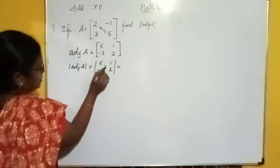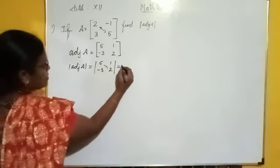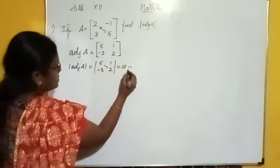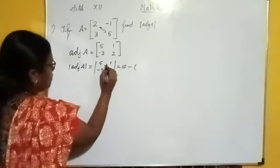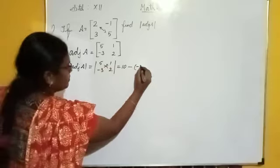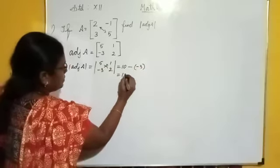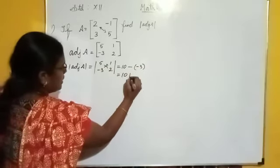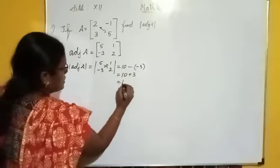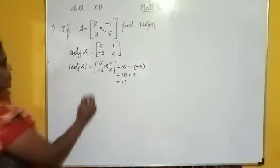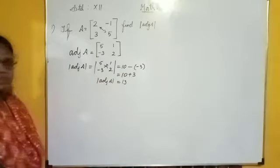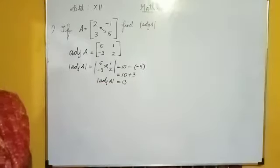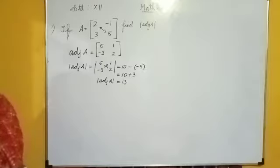That is equal to 5 times 2, which is 10, minus (this minus is in the formula), minus 3 times 1 which is minus 3. 10 minus minus 3 gives us plus 3, so that equals 13. Wait, let me recalculate: 10 minus into minus is plus 3. That equals 13. So the determinant of adjoint is 13. Actually, the result shown is 30. Suppose they gave a 3 by 3 matrix.